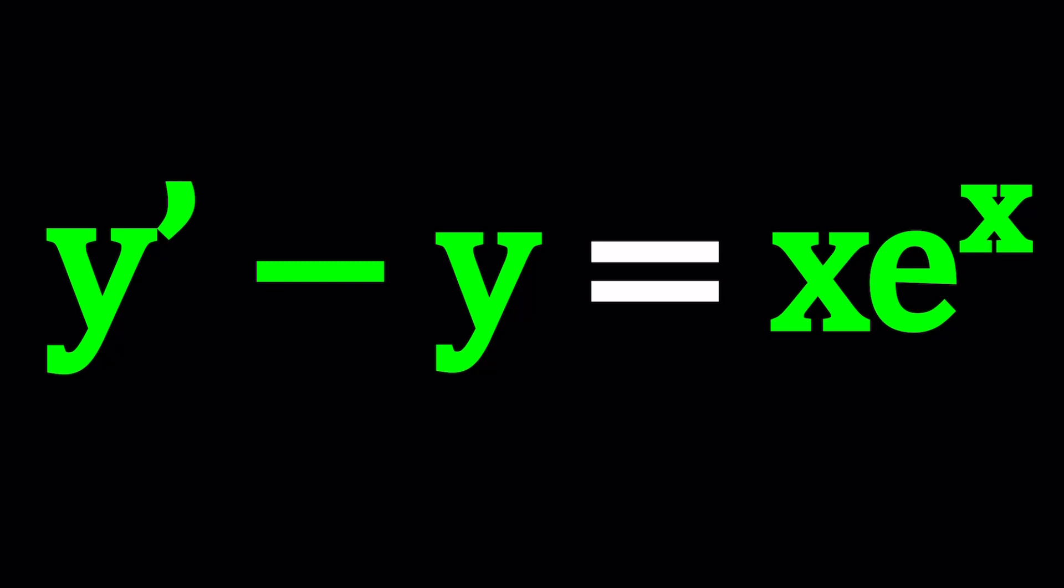We're going to use a very special method for this problem. First, think about the homogeneous case. If we only had something like y' minus y equals e to the x, this would be easily solvable because we could first look at the homogeneous case, find a homogeneous solution, and then find a particular solution, probably in the form of something times e to the power x, and then plug it in to find the constant.